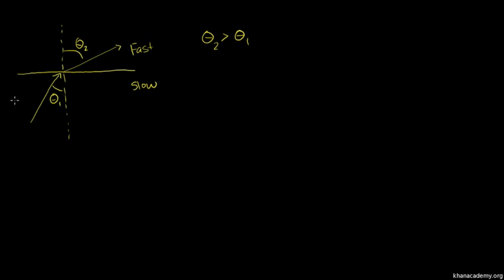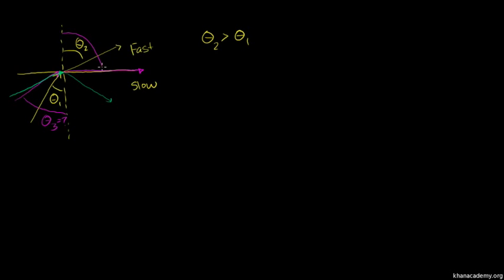Is there some angle — depending on the two substances that the light travels in — where if the incident angle is big enough, the refracted angle is going to be 90 degrees, such that the light is actually never going to escape into the fast medium? And if I had an incident angle larger than that, the light won't even travel along the surface — it'll actually reflect back. So you actually have something called total internal reflection. To figure that out, what we need to do is find at what angle theta 3 do we have a refraction angle of 90 degrees.